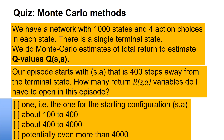I give you the following information. Our episode starts in a state SA that is 400 steps away from the terminal state. How many return variables of SA do I have to open in this episode? How many variables do I have to allocate in this episode?